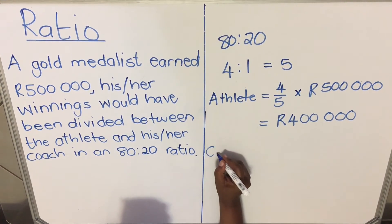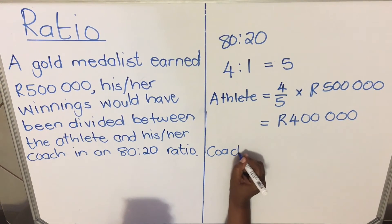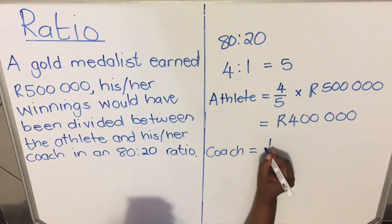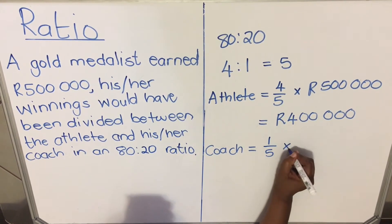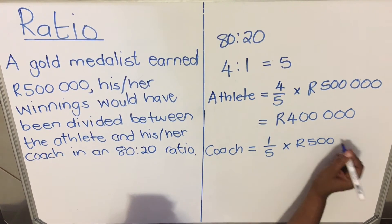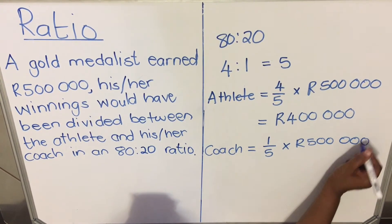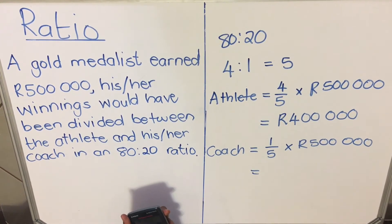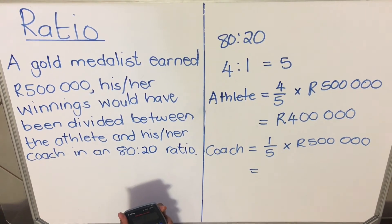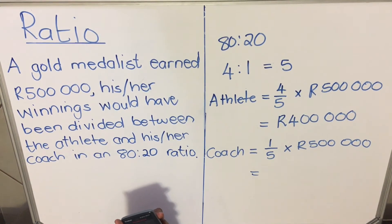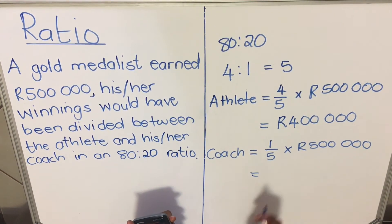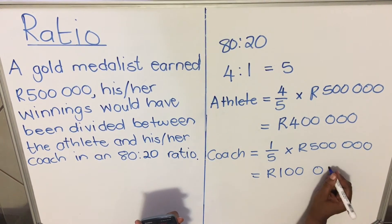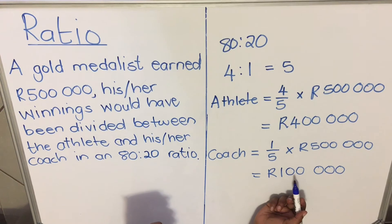For the coach's portion: the coach gets 1 out of 5 portions, multiplied by the total amount of 500,000. So 1 out of 5 multiplied by 500,000 — the coach will get 100,000.